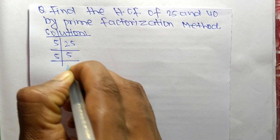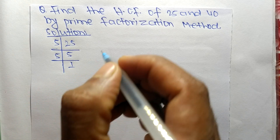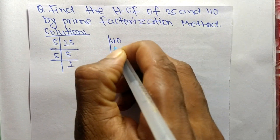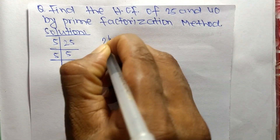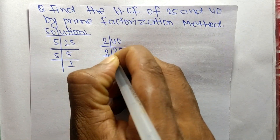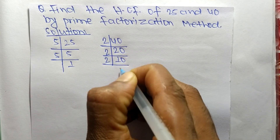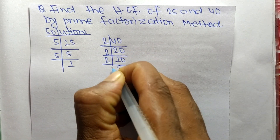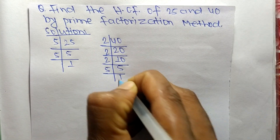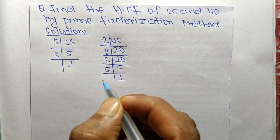The prime factors of 40 are: it is 2 times 20, meaning 40; 2 times 10, meaning 20; 2 times 5, meaning 10; and 5 times 1, meaning 5.